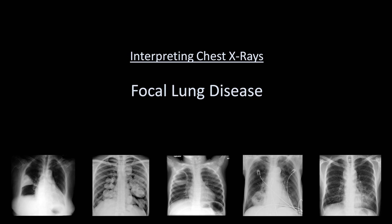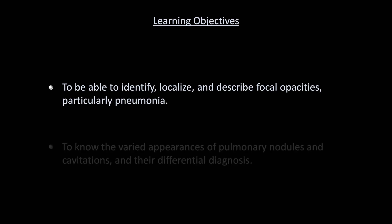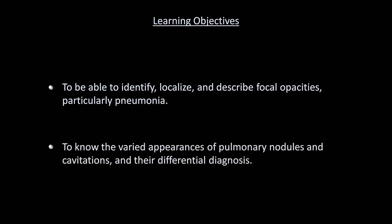This is the eighth video in this series on interpreting chest x-rays, and the topic is focal lung disease. Today's learning objectives are to be able to identify, localize, and describe focal opacities, particularly pneumonia, and to know the varied appearances of pulmonary nodules and cavitations, and their differential diagnosis.